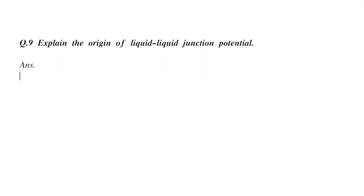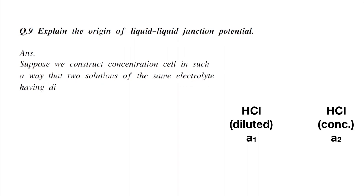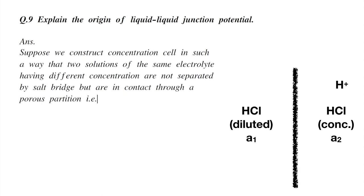Explain the origin of liquid-liquid junction potential. Suppose we construct a concentration cell in such a way that two solutions of the same electrolyte having different concentrations are not separated by a salt bridge but they are in contact through a porous partition, that is, a diffusible membrane.